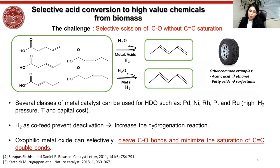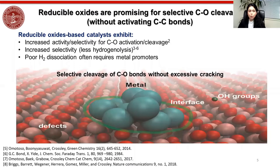Different types of catalysts have been proposed for this. One of them are metal catalysts such as palladium, nickel, platinum, and ruthenium. These catalysts require high hydrogen pressure in order to prevent deactivation. However, a downside is that this increases hydrogenation rates. Other types of catalysts that can be used are oxyphilic metal oxides. These are very good for decarbonylation reactions because they increase activity and selectivity for breaking the C-O bond, and also reduce hydrogenolysis rates. However, these catalysts are very poor for hydrogen dissociation, which is why they usually require metal promoters.